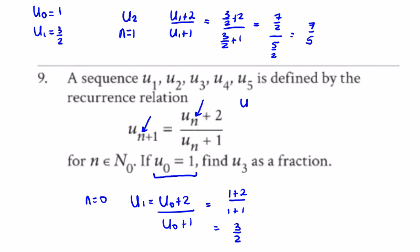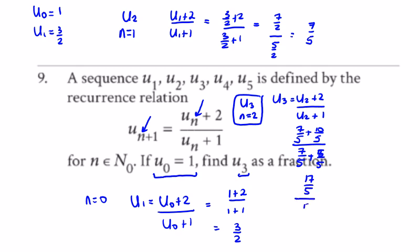And then for u3, where you asked for u3 as a fraction, n is equal to 2. So u3 is equal to u2 plus 2 over u2 plus 1, 7 over 5. I'll write 2 as 10 over 5 over 7 over 5 plus 1 is 5 over 5. So it looks like we get 17 over 5 divided by 12 over 5, which is 17 over 12. Question 9 done.